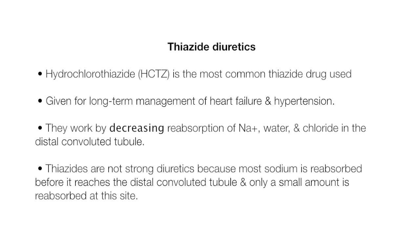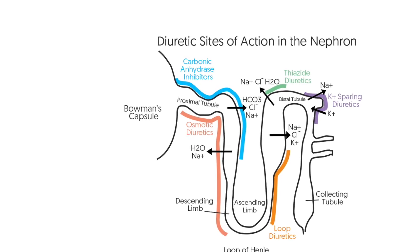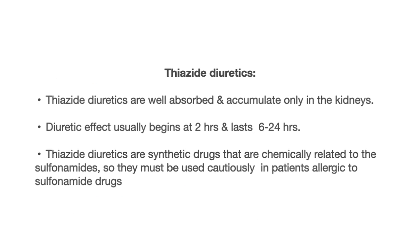Thiazide diuretics are the most commonly used diuretic. Hydrochlorothiazide, also known as HCTZ, is the most common thiazide drug, given for long-term management of heart failure and hypertension. Thiazide diuretics work by decreasing the reabsorption of sodium, water, and chloride in the distal convoluted tubule. They are not strong diuretics because most sodium is reabsorbed before it reaches the distal convoluted tubule. They are well absorbed and accumulate only in the kidneys; diuretic effects usually begin at two hours and last six to 24 hours. Thiazide diuretics are chemically related to the sulfonamides, so they must be used cautiously in patients allergic to sulfonamide drugs.